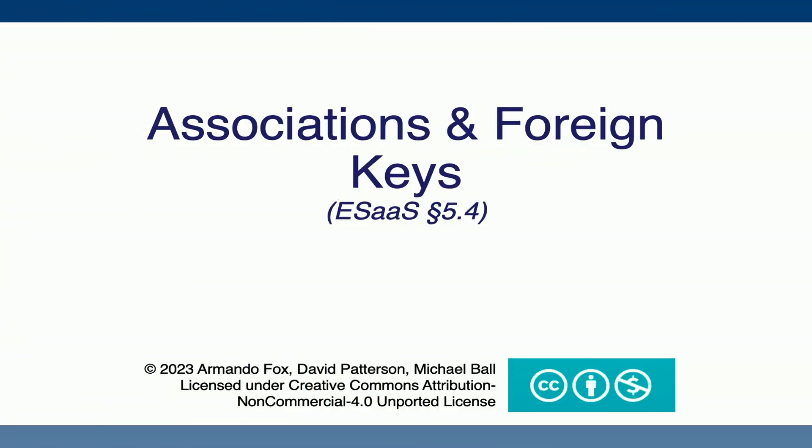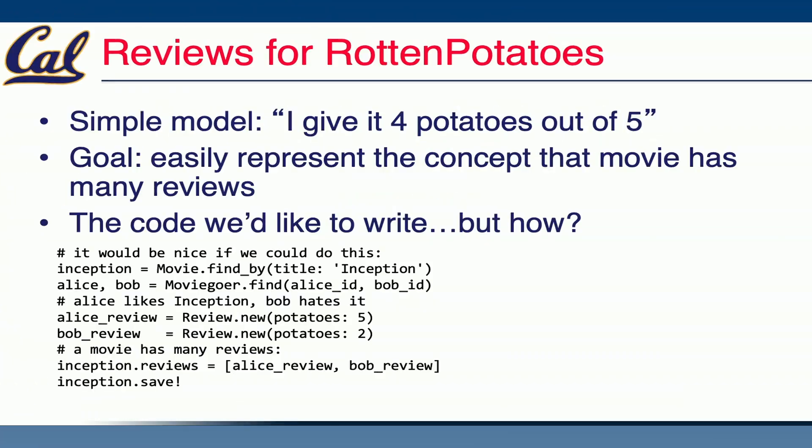What we're going to talk about is associations and foreign keys. The goal is to be able to have multiple bits of data that are linked together. In our movies app, we have a movies model with a title, description, and so on, and a users model so that people can log in. Now we're going to talk about adding content that is associated with some other content.